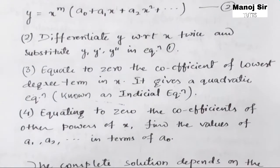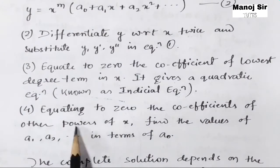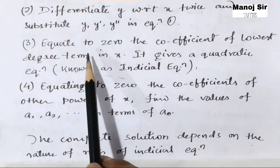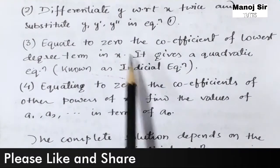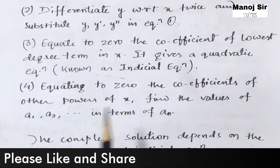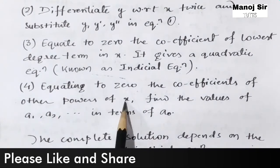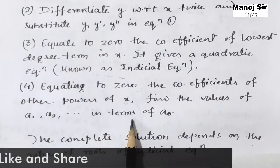Similarly, we will equate to 0 the coefficients of other powers of x, and find the values of a1, a2, a3, a4, and so on in terms of a0. We equate the coefficient of the lowest degree term in x to 0, which gives the indicial equation, and then equate coefficients of other powers of x to find a1, a2, a3, a4, dot dot dot in terms of a0.